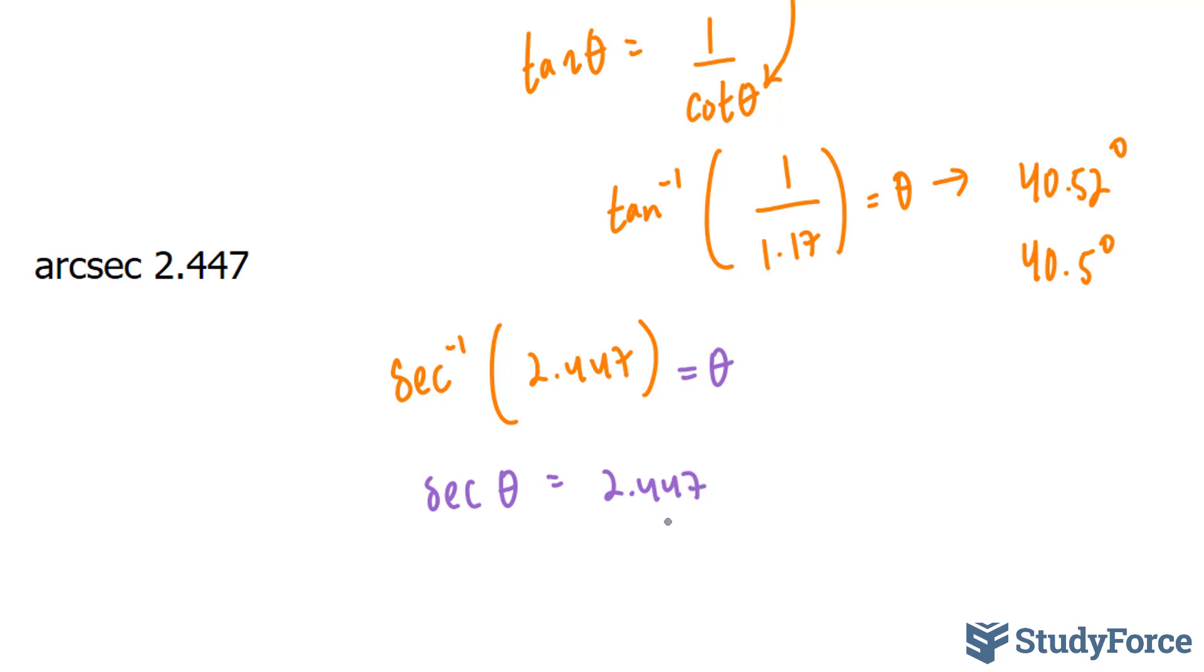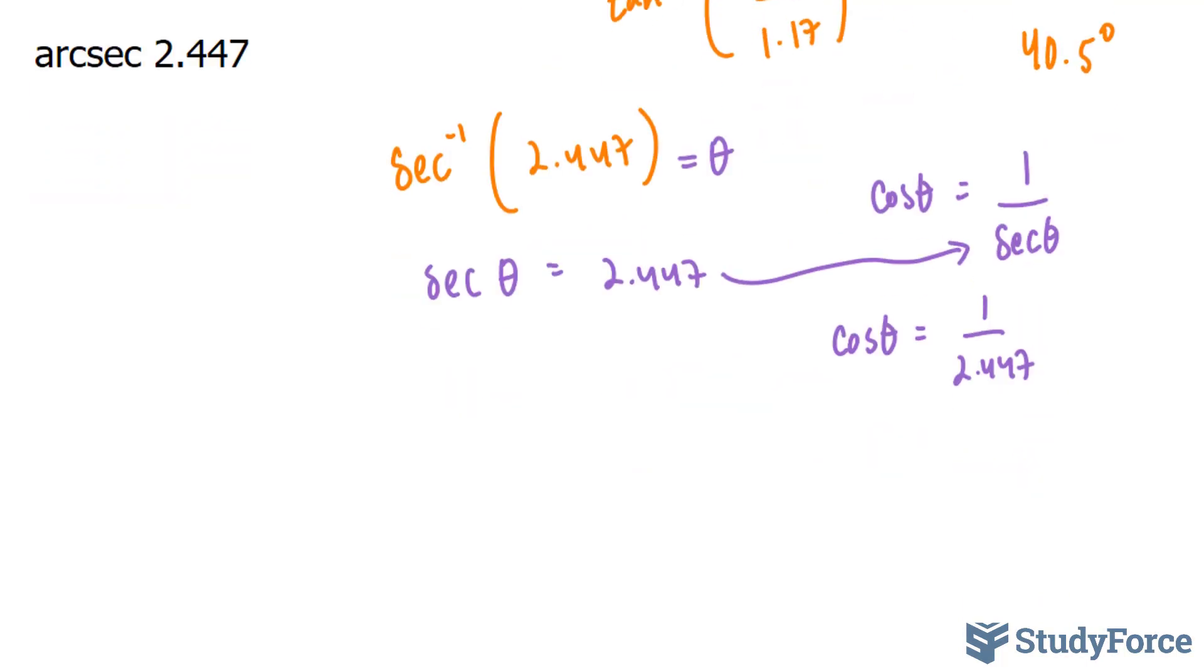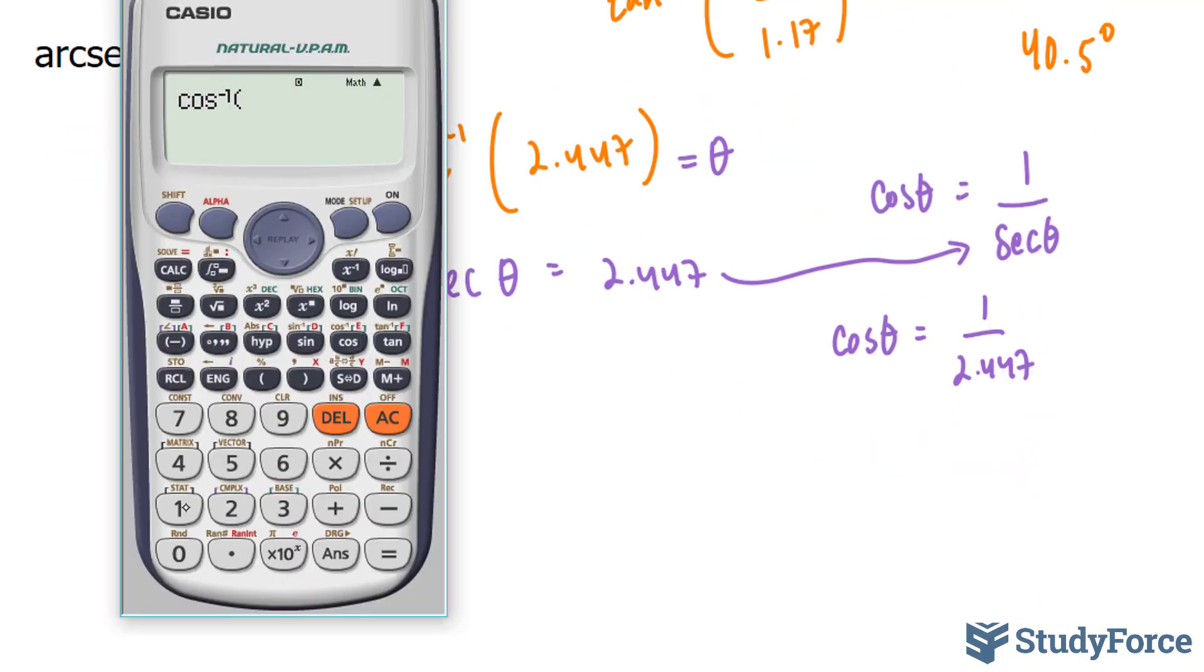And we know secant is equal to cosine 1 over that. So I'm going to replace that with 2.447. And I end up with cosine theta is equal to 1 over 2.447. We're going to take the inverse now.